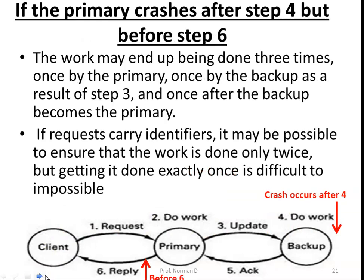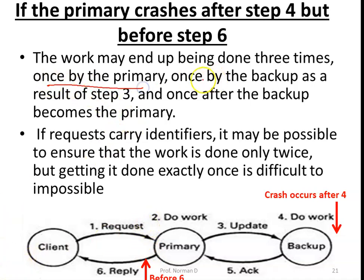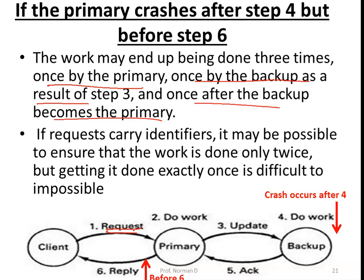If the primary crashes after step 4 but before step 6, the work may end up being done three times: once by the primary, once by the backup as a result of step 3, and once after the backup becomes the primary. Only if requests carry identifiers or a nonce may it be possible to ensure the work is done only twice. Getting it done exactly once is difficult to impossible.